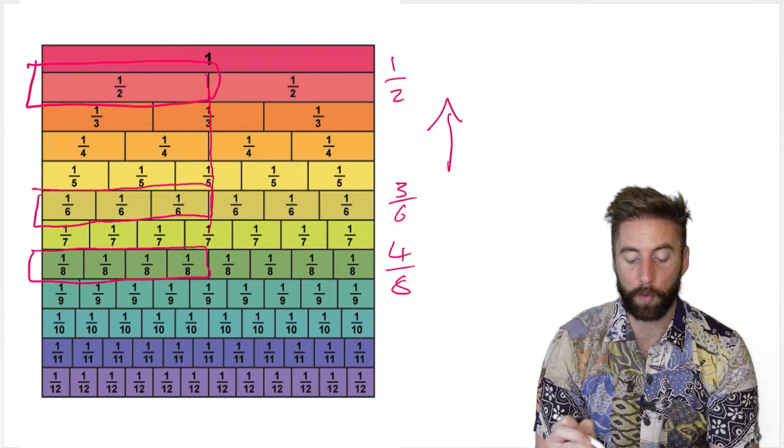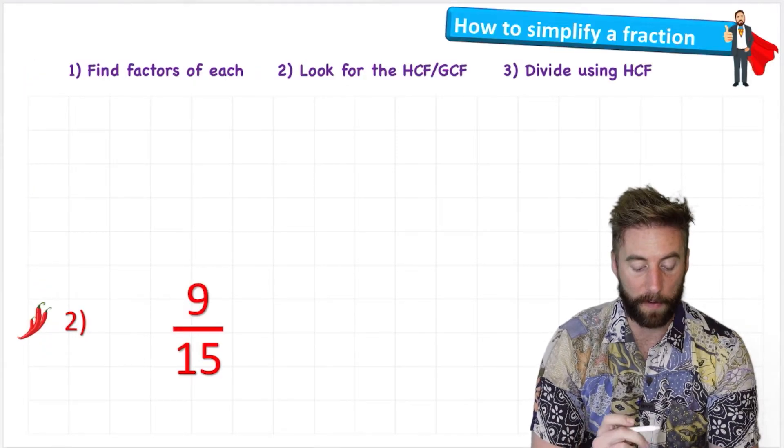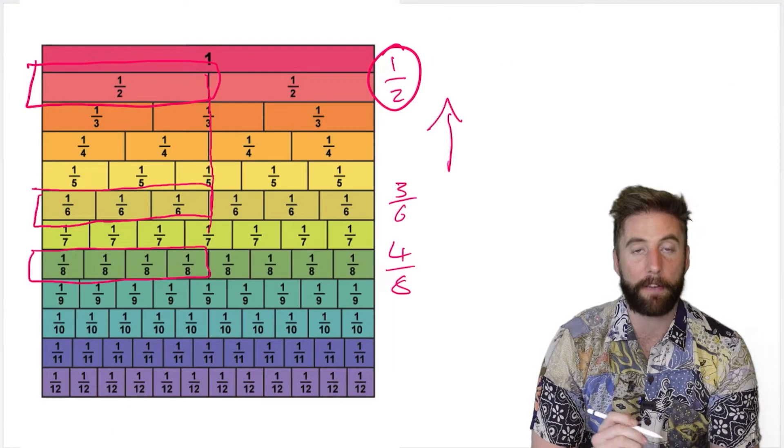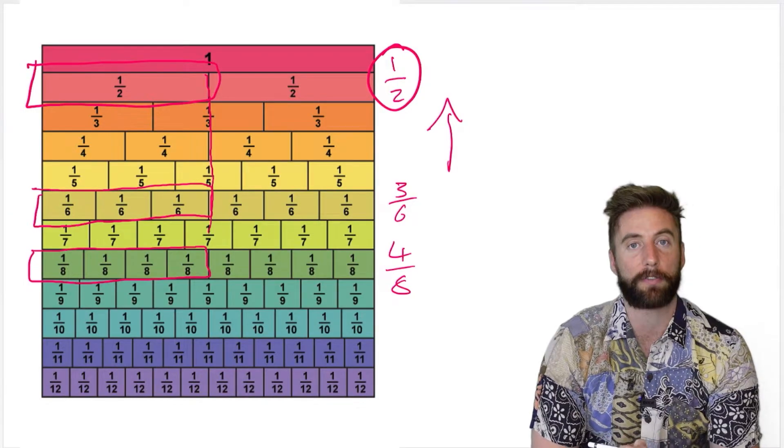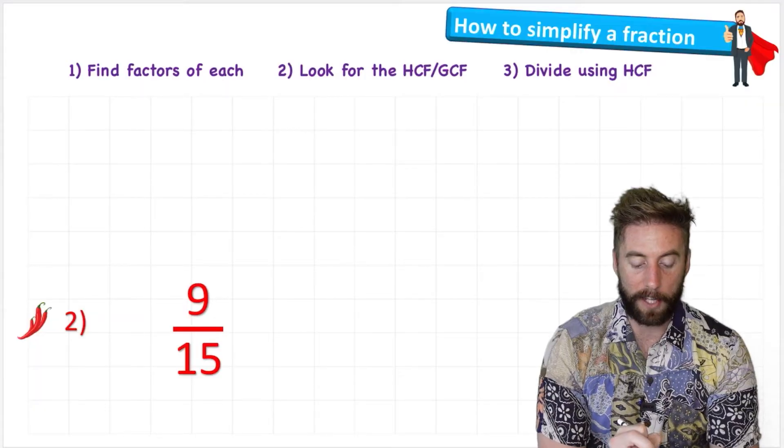Let's have a look at a more challenging one: nine fifteenths. And we can actually see on my fraction wall it doesn't even go down to 15, so we can't use that. So we're going to have to use our new technique. And the first thing to do is find factors of each, the numerator and the denominator.